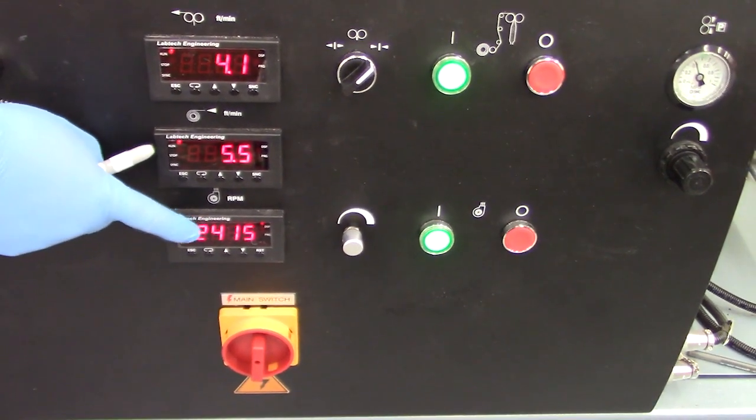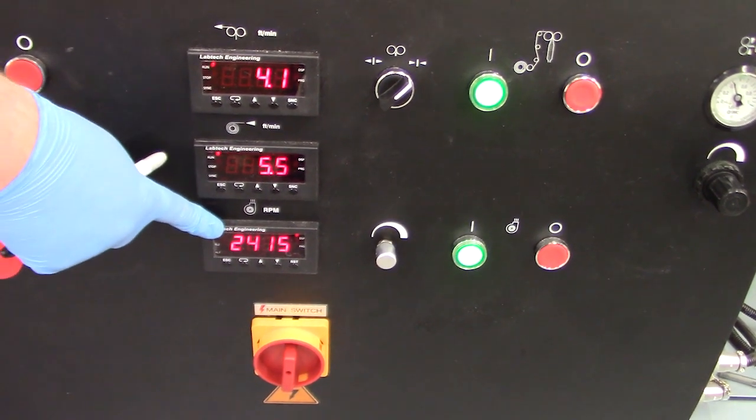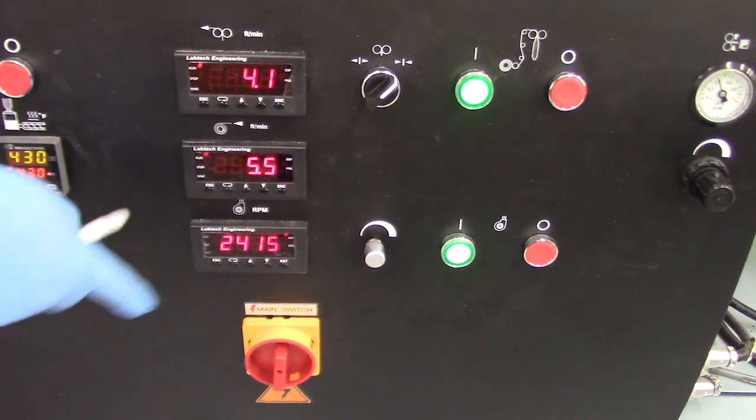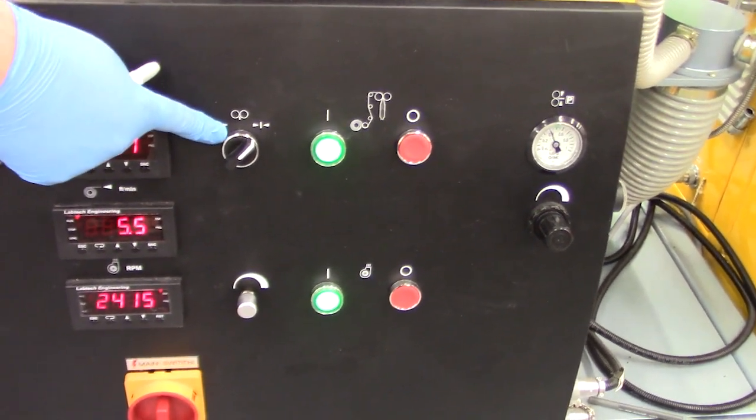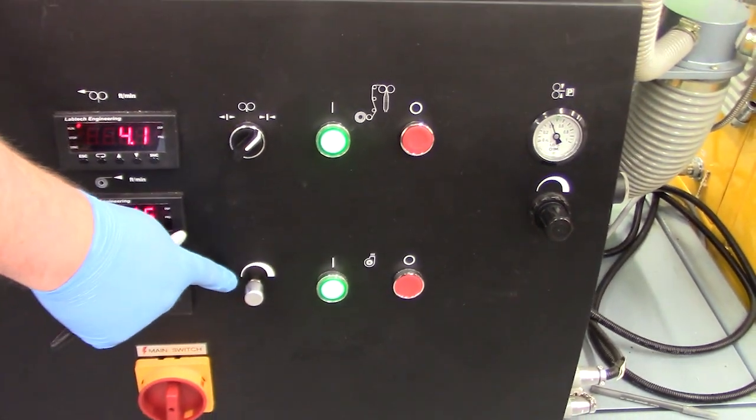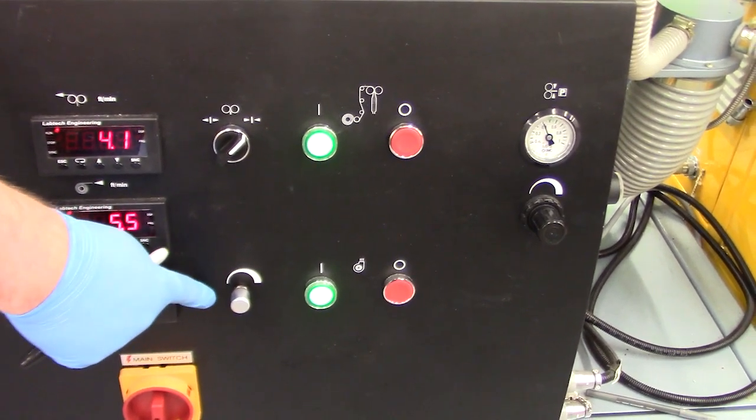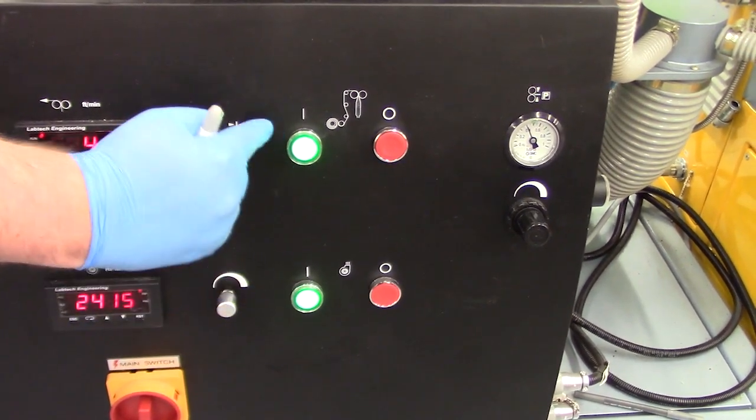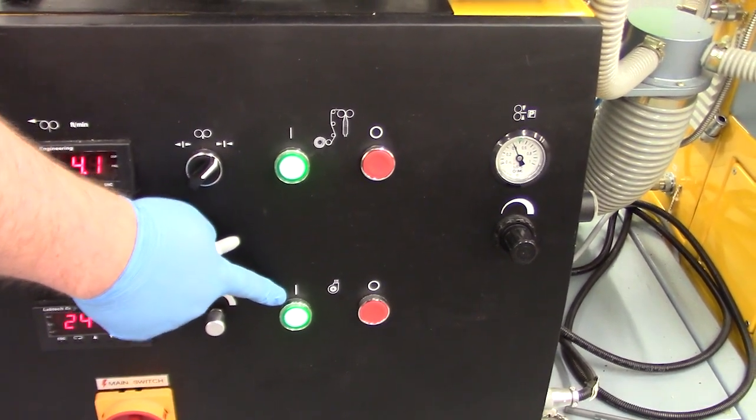We have our blower fan speed, 2415 RPMs. This knob opens and closes our nip rolls. This tachometer controls the speed of our blower motor, and then these are the power on for the nip and drive rolls, power on for the blower motor.